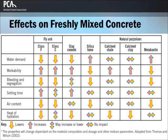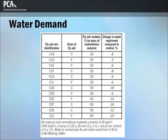This table provides an overview of the freshly mixed concrete properties that SCMs affect and their degree of influence. The properties will change dependent on the material composition and dosage along with other mixture parameters. Of all the SCMs, fly ash has the most beneficial effect on water demand. Concrete mixtures containing fly ash generally require 1–10% less water for a given slump than concrete containing only Portland cement. However, fly ash with a high percentage of coarse particles is less efficient in reducing water demand, and in extreme cases may increase the amount of water required by up to 5%.